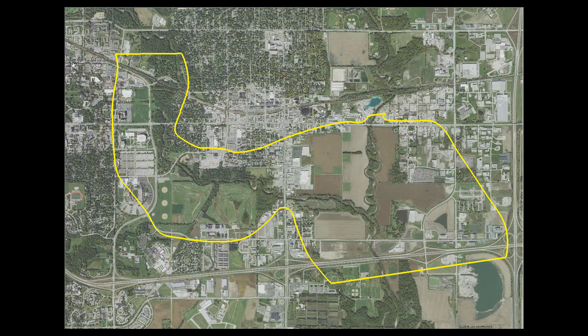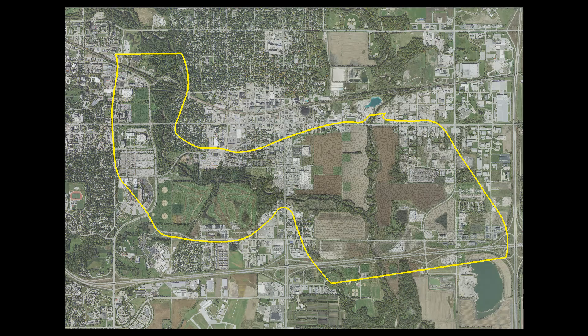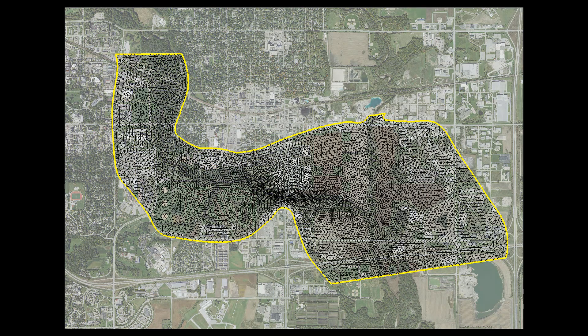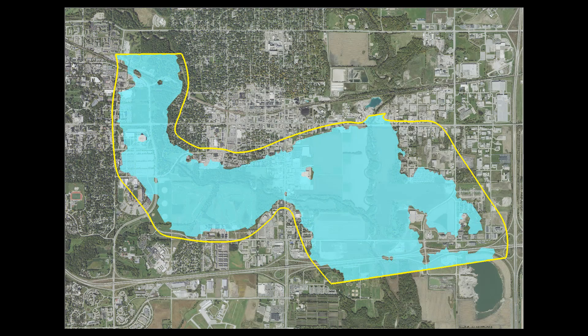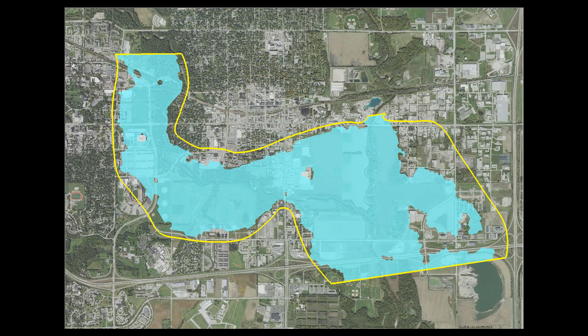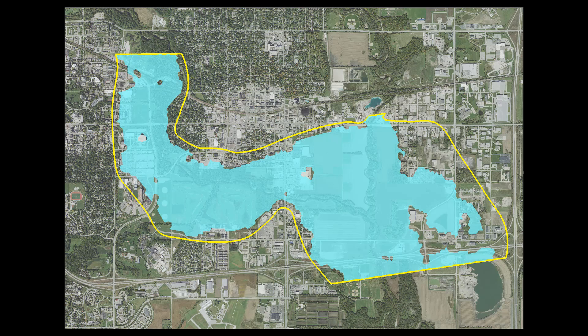No matter what method is used to select the lateral extents, it is good practice to first create a coarse model that will run quickly to help assess model domain limits. The results from a coarse model provide approximate water surface areas that can be used to adjust the lateral model extents.